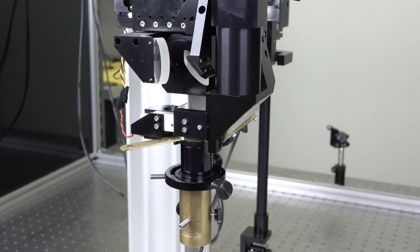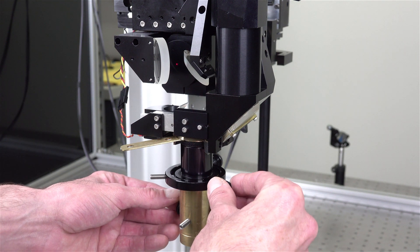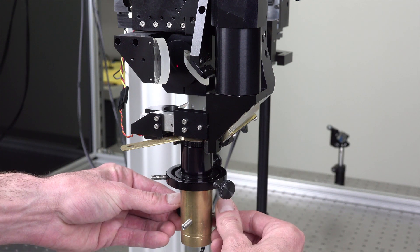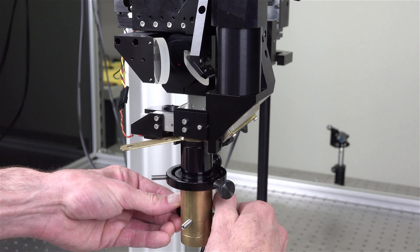Step 4: Use both the translational adjustment, the top thumb screws, as well as the angular adjustment, the bottom thumb screws, to guide the laser beam through the pinholes.